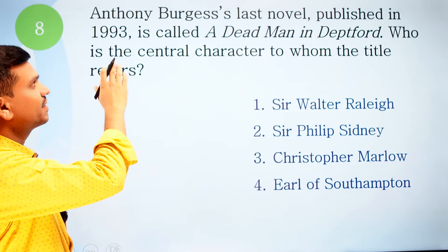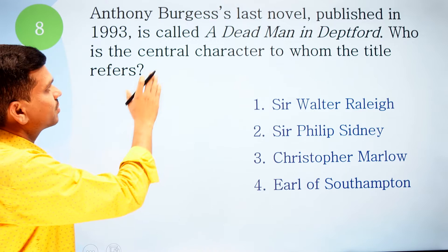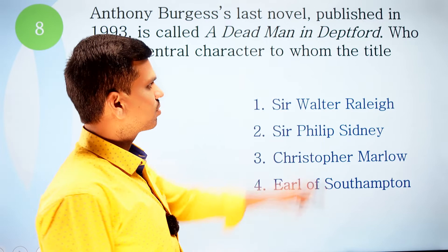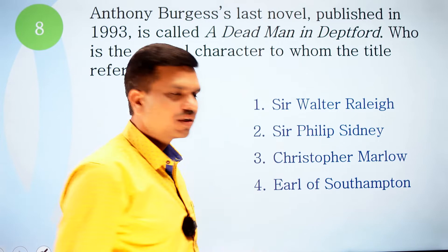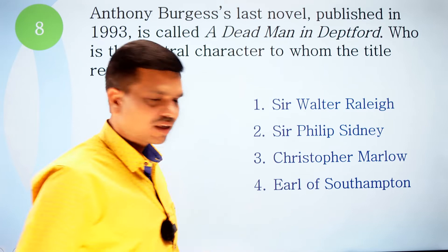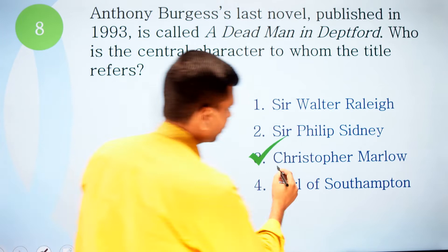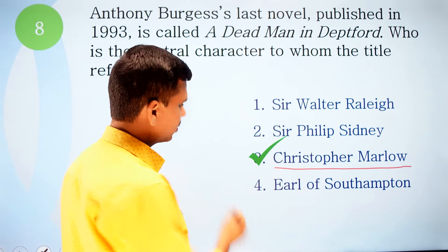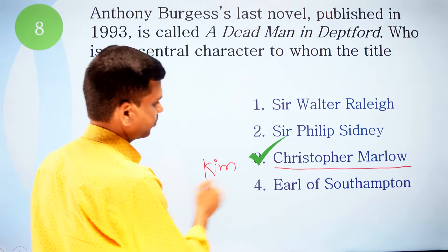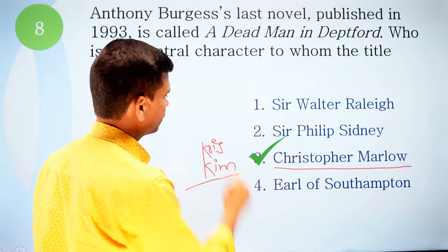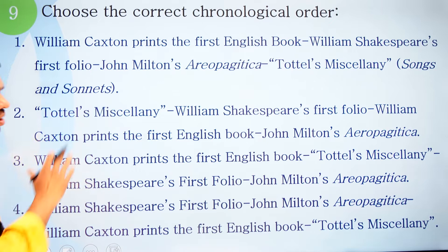Question eight: Anthony Burgess's last novel, published in 1993, is called 'A Dead Man in Deptford.' Who is the central character to whom the title refers? Options: one, Sir Walter Raleigh; two, Sir Philip Sidney; three, Christopher Marlowe; four, Earl of Southampton. The correct option is number three, Christopher Marlowe — who appears in the novel as Kim Marlowe or Chris Marlowe.